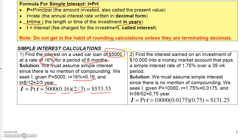The second example here involves an investment of $10,000 into a money market account that pays a simple interest rate of 1.75% over a 39-week period. Again, here we're just looking for the interest. So there's no compounding. It actually tells us here it's a simple interest rate. So what we're going to look for is the interest. And again, we just use the principal times rate times time.